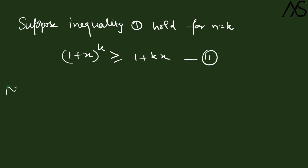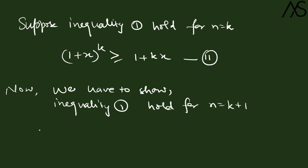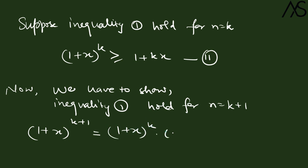Now we have to show inequality 1 holds for n = k + 1. We write (1 + x) to the power (k + 1) as (1 + x)^k multiplied by (1 + x).